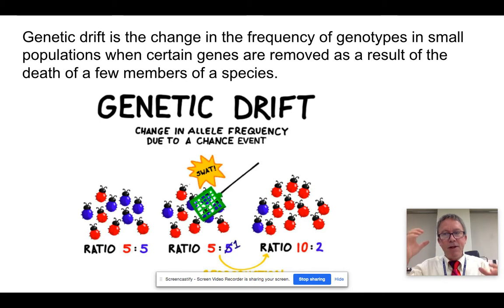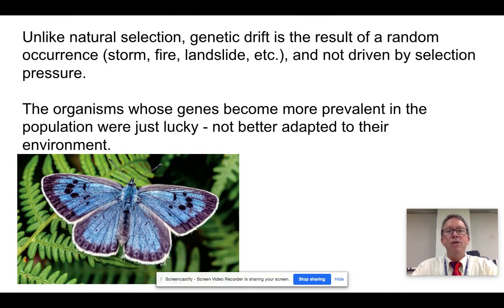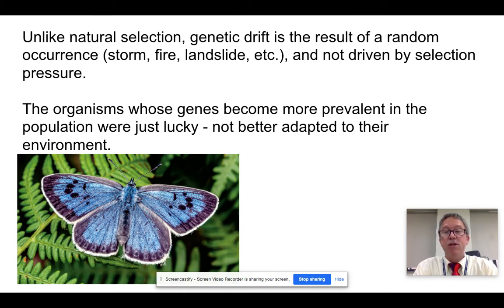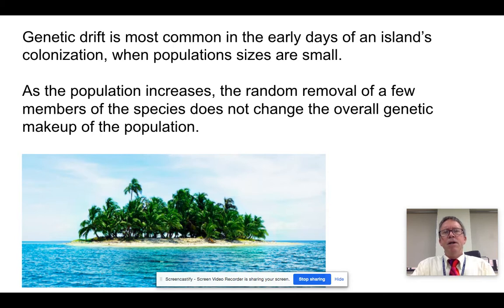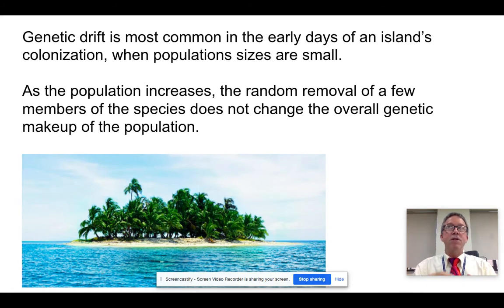We find that it is the small populations on islands that tend to lead to speciation and endemism. This is not because there is selective pressure like there would be with natural selection — genetic drift just means there was a reduction in the total number of genes, and the ones that did not get removed become more prevalent. There are selective pressures on islands too, but speciation can happen quicker with smaller populations. On the early days of an island's colonization, when the population is small, that's when genetic drift is more likely to occur.